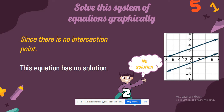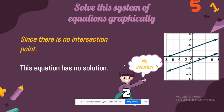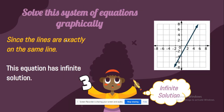For parallel lines, this is called no solution. This equation has no solution because the lines do not intersect at any point, so this equation does not have a solution.